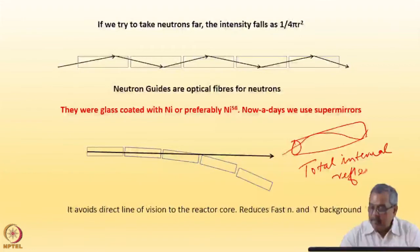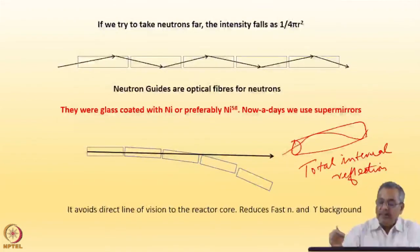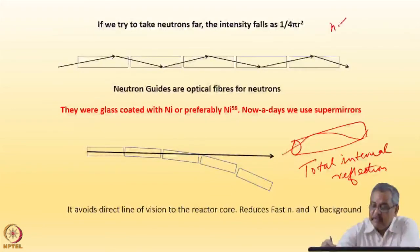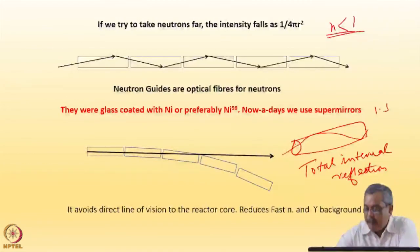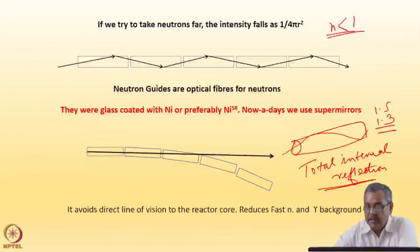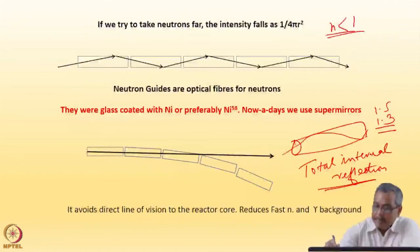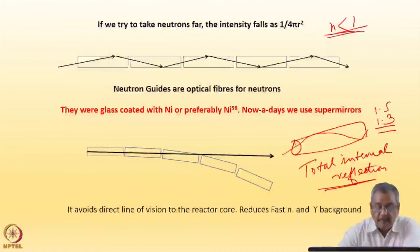In the case of neutrons, something similar is done, but for neutrons the refractive index n is slightly less than 1. For light, the refractive index is typically 1.3 to 1.5, so it is more than 1 and you have total internal reflection. For neutrons, because n is less than 1, you have total external reflection.